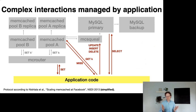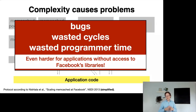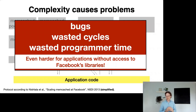This complexity is annoying for application developers who have to think about all these interactions. It leads to bugs, wasted cycles due to many RPCs, and wasted programmer time. Moreover, if you're not Facebook and don't have McSqueal and McRouter to hide away some of this complexity, then if you're a small or medium-sized enterprise with a website that needs to handle a lot of load, you're pretty much on your own.